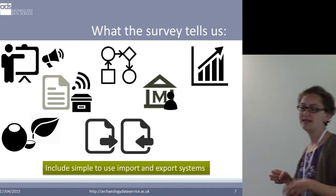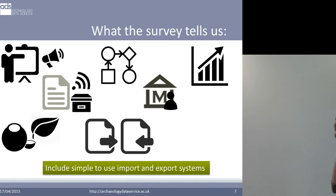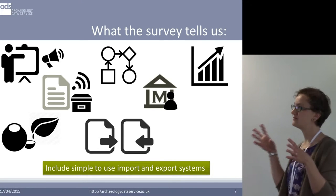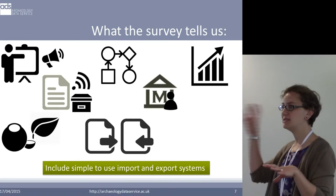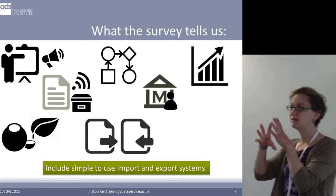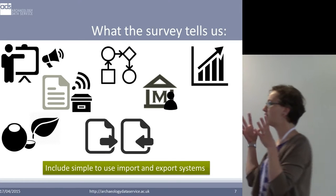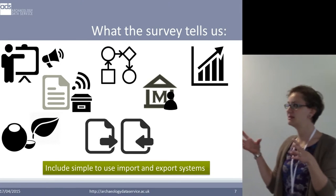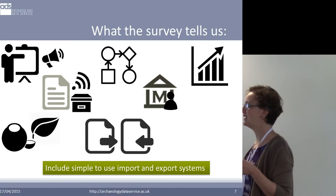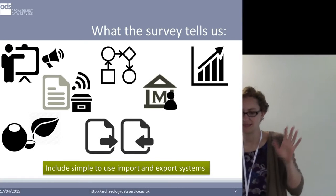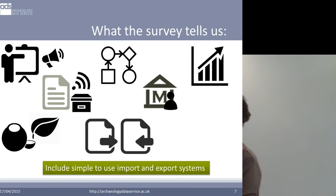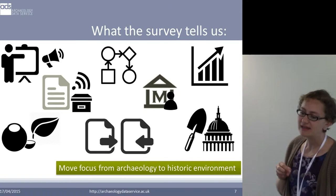The third key point is a simple to use and automated system for synchronising and transferring data from OASIS to HERs and from HERs back to OASIS, so that data can flow without problem. That is the main sticking point of the current OASIS system — it's too hard to get the information out. People end up copying and pasting it, which is time consuming and inefficient.